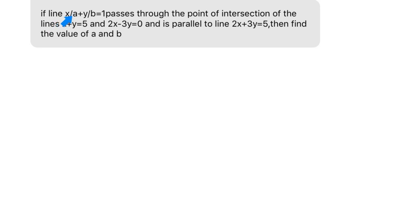The question is: if line x/a + y/b = 1 passes through the point of intersection of the lines x + y = 5 and 2x - 3y = 0, and is parallel to the line 2x + 3y = 5, then find the value of a and b.